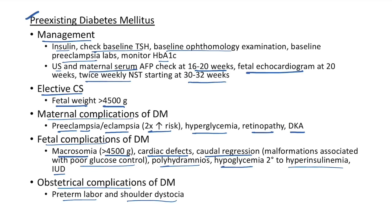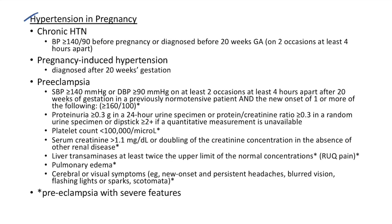Hypertension in pregnancy — definitions: Chronic hypertension is BP ≥140/90 before pregnancy or diagnosed before 20 weeks gestational age, measured on two occasions at least 4 hours apart. Pregnancy-induced hypertension (PIH) is BP ≥140/90 on two occasions at least 4 hours apart, diagnosed after 20 weeks gestation.